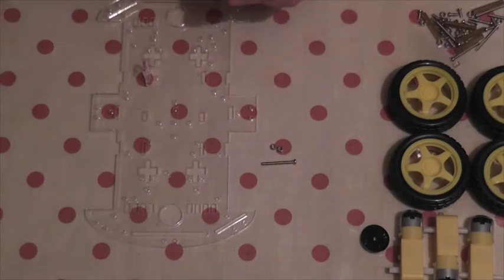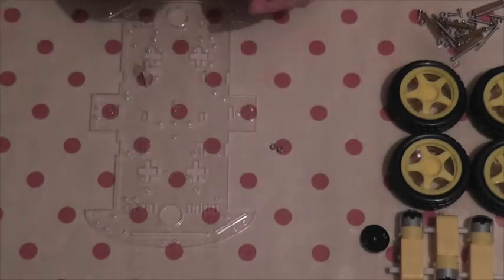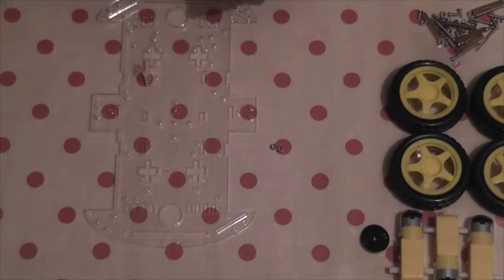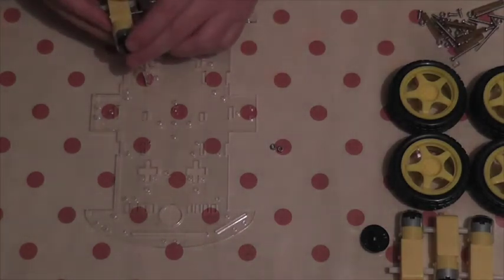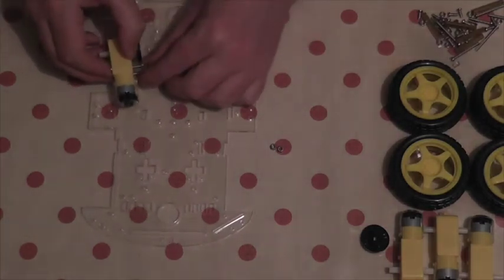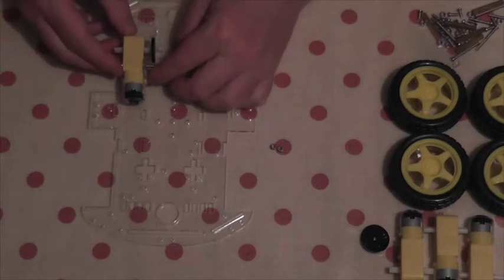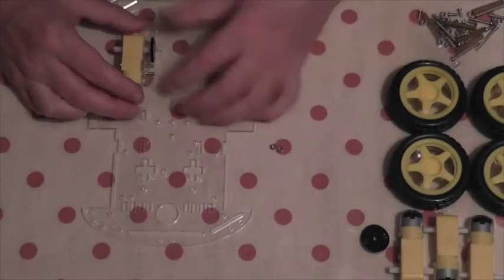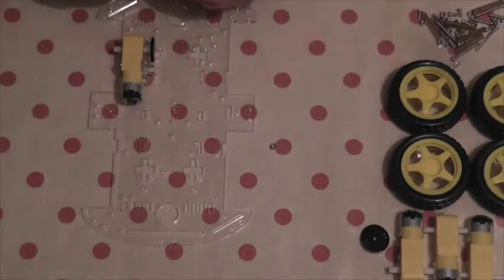Slide two of the long bolts through the holes provided in the plastic case surrounding the motor. Push them through the two holes in the plastic mounting plate, and then tighten them up using two nuts. You'll repeat this for the other three motors.